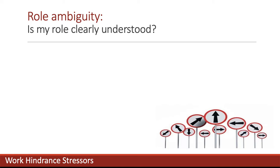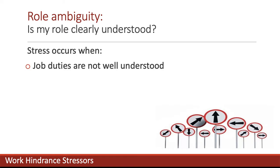The second type of work-based hindrance stressor is called role ambiguity, and this occurs when there is a lack of clarity around what one person is supposed to be doing. Employees feel stressed when their job duties are not well understood. If you've ever worked in a job where you're supposed to be doing something but you're not sure what it is, you're experiencing role ambiguity.